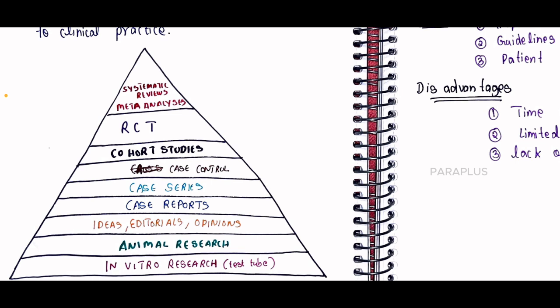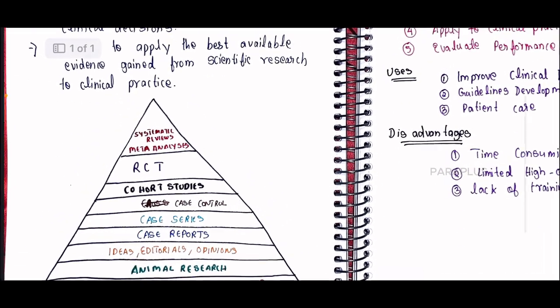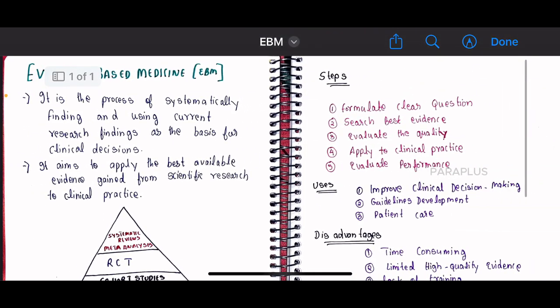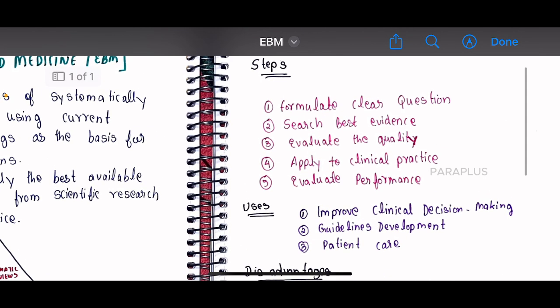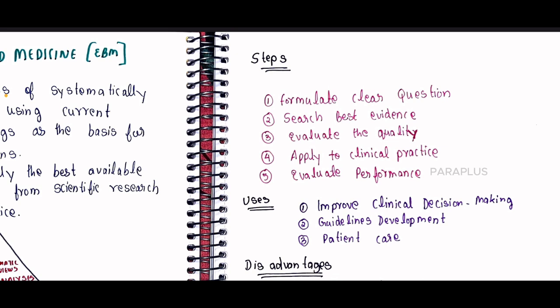Let's talk about the steps of Evidence Based Medicine. A physician says: what is the best drug? What can we do? First, formulate a clear question. If we know about paracetamol, we can formulate a question. Then we will search for the best evidence.